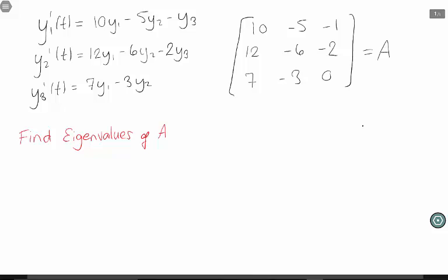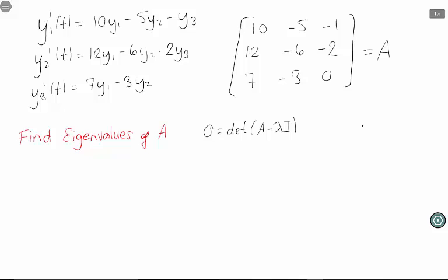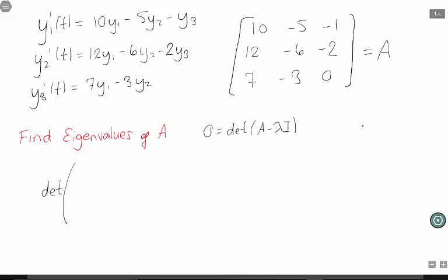The first thing we're going to do is find the eigenvalues of A. This happens when 0 equals the determinant of A minus lambda I. So A minus lambda I is what I get if I subtract lambda from all of the diagonals of A.